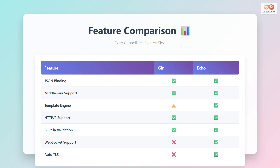When it comes to template engines, ECHO provides full built-in support for various template engines, while JIN offers basic template support that may require additional configuration for complex templating needs. Both frameworks support HTTP/2, ensuring your applications can take advantage of the latest web protocols. Built-in validation is available in both frameworks. A significant difference emerges with WebSocket support, where ECHO provides built-in WebSocket capabilities while JIN requires third-party packages. Similarly, ECHO includes automatic TLS support, while JIN requires additional setup for TLS features.